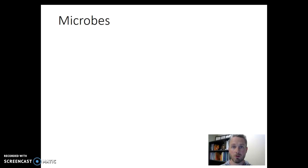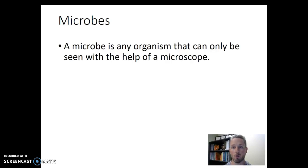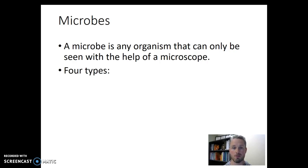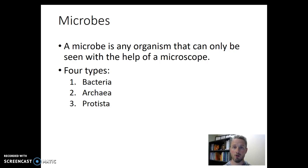So in terms of microbial diversity, we're thinking about microbes. Let's define the term microbe. A microbe is any organism that you can only see with the help of a microscope — these are all the single-cell things that are too small to be observed with the naked eye. When we think about microbial diversity, we're going to break microbes into four groups: bacteria, archaea, a group called protista or protists, and some fungi that are microbial.